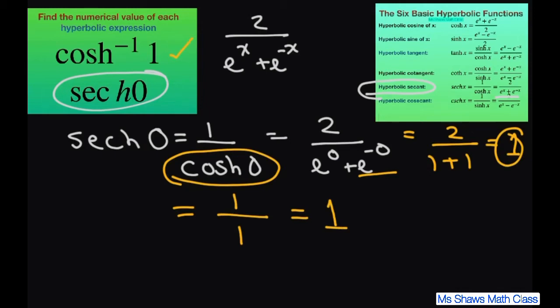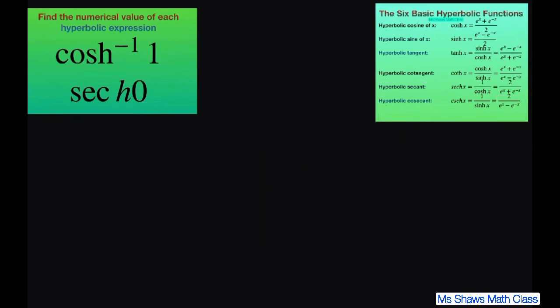Alright, now let's go to this one, the inverse. So for the inverse, we're going to write this as hyperbolic cosine of negative 1 of 1.